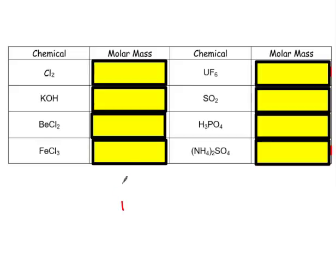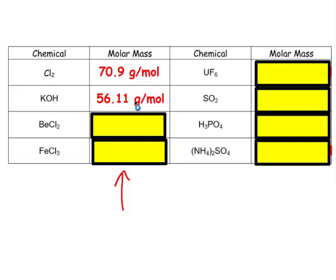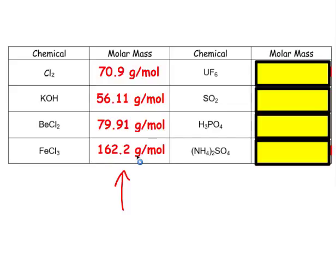Go ahead and pause the video and solve this left column on your own. Restart once you've solved the left column. Make sure that you're putting units on your answers. So you should have gotten 70.9, 56.11, 79.91, and 162.2. And all of those are grams per mole.